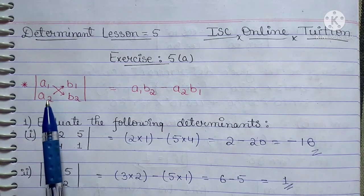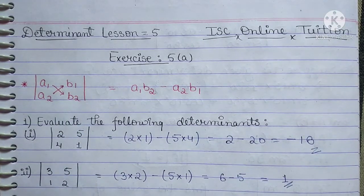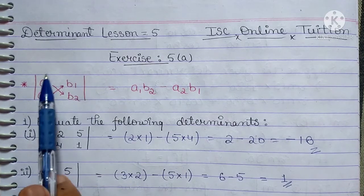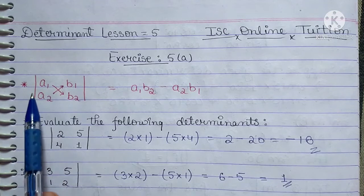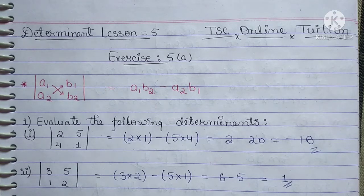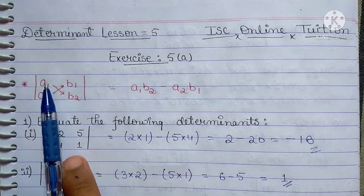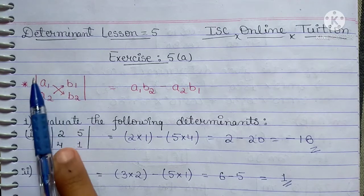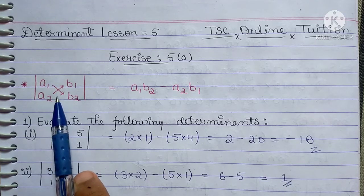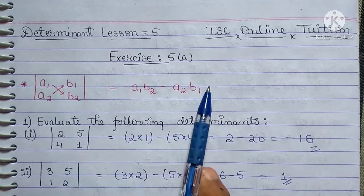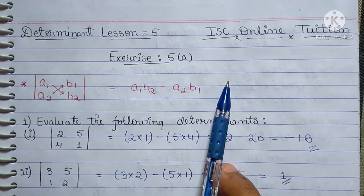पहला formula यह है — determinant और matrices में common difference यह होता है कि अगर line का कोई bracket न हो तो यह determinant है। इसको solve करेंगे इसका multiplication cross में minus इसका multiplication से — a₁b₂ minus a₂b₁ — यही answer आएगा।